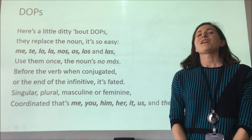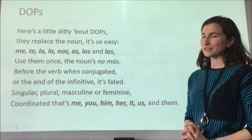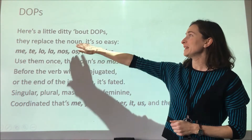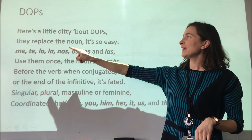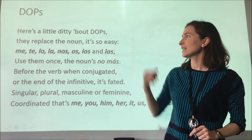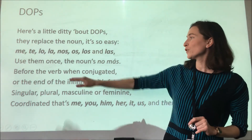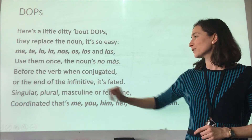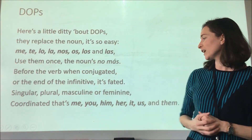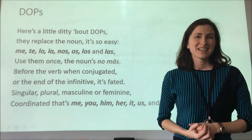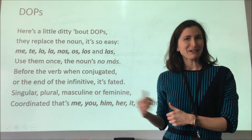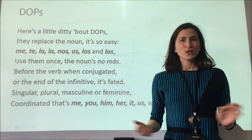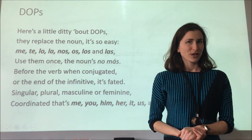To summarize, here's a little ditty about DOPs: They replace the noun, it's so easy — me, te, lo, la, nos, os, los, and las. Use them once, the nouns no más. Before the verb when conjugated, or the end of the infinitive — it's fated. Singular, plural, masculine, or feminine — me, you, him, her, it, us, and them. Practice this at home — it'll help you remember the rules for when and how to use your direct object pronouns in Spanish.